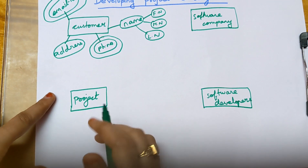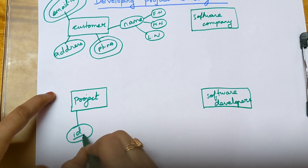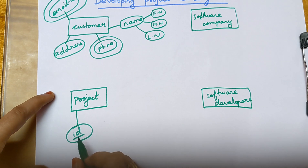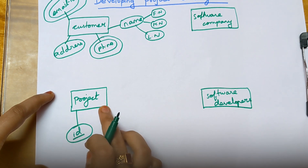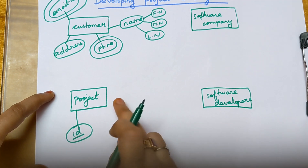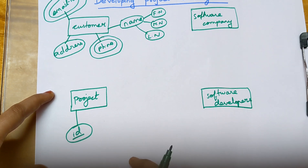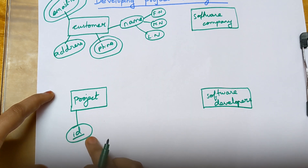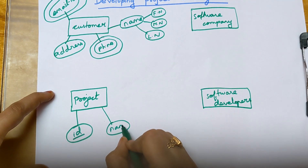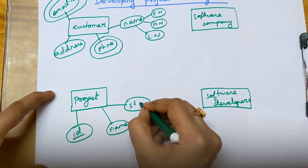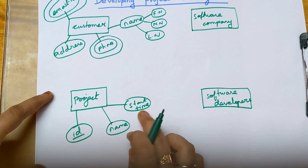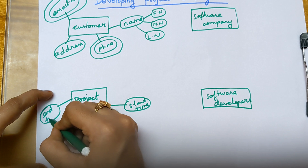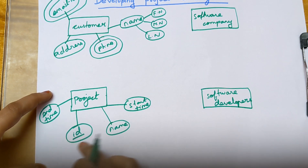Next let us see the attributes of project. Project will have an ID, which must be underlined, because project ID will be unique for every single project — therefore ID is known as a primary key. Among ten projects, no IDs will be repeated, so ID is a primary key and we underline it. Next is project name. Next is start time of the project — the date it starts. Next is end time of the project — when the project ends. These are the attributes of project.